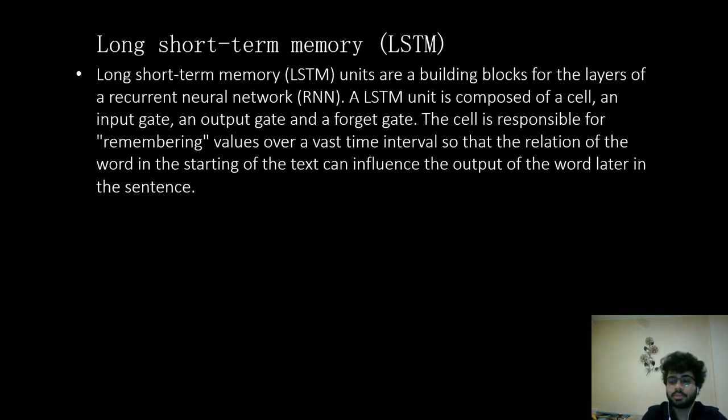Traditional neural networks can't remember stuff. They can't predict based on their past definition. This problem is overcome by LSTM. LSTM addresses this issue with networks with loops in them, allowing information to persist. An LSTM unit is composed of a cell, an input output gate, and a forget gate. The cell is responsible for remembering values over a vast time interval so that the relationship of a word in the starting of a text can influence the output of the word later in the sentence.